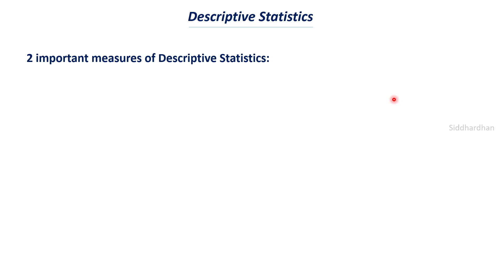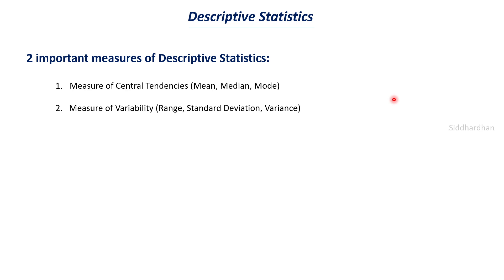In descriptive statistics there are two main important measures. The first is the measure of central tendency — values such as mean, median, and mode. Mean is the average value of the data, and median and mode are similar but computed differently. The second is the measure of variability — examples include range, standard deviation, and variance. These values tell us how much the data varies from the mean value.